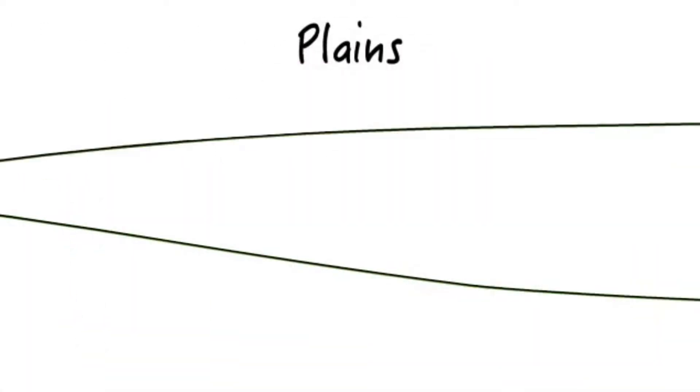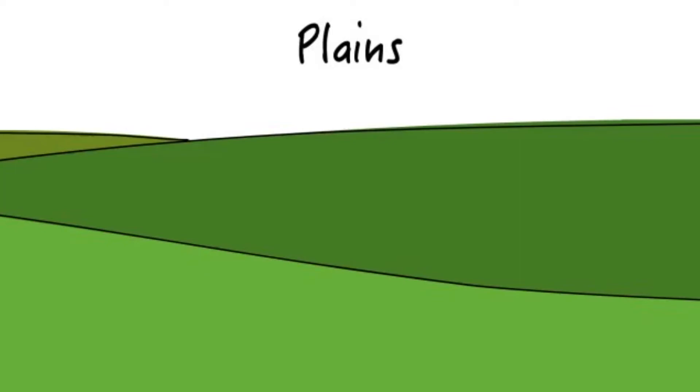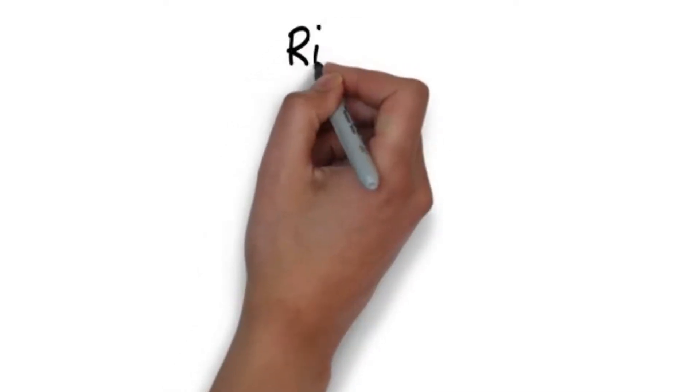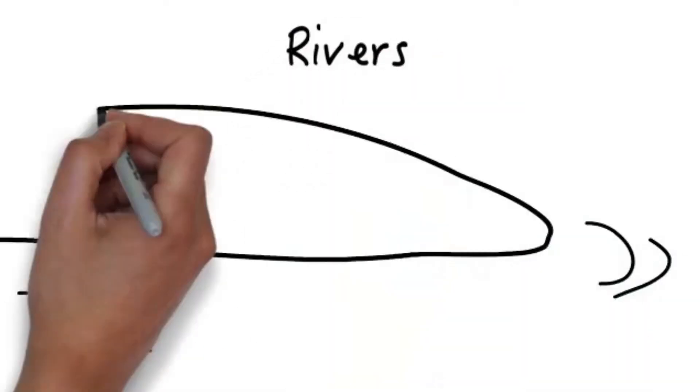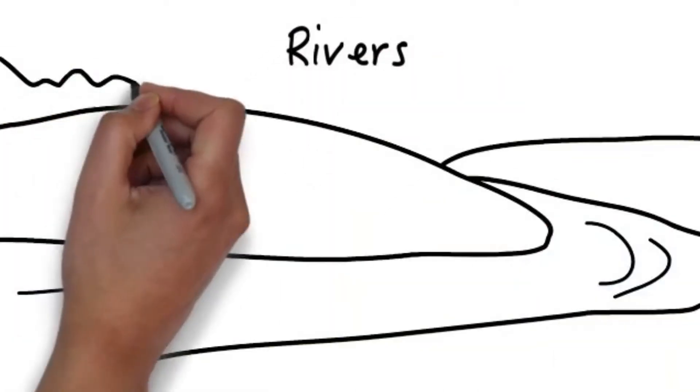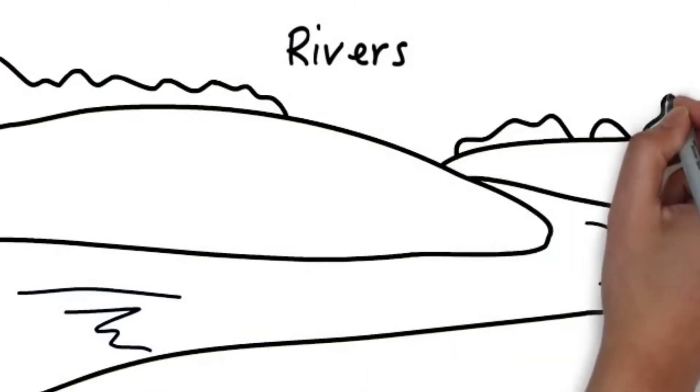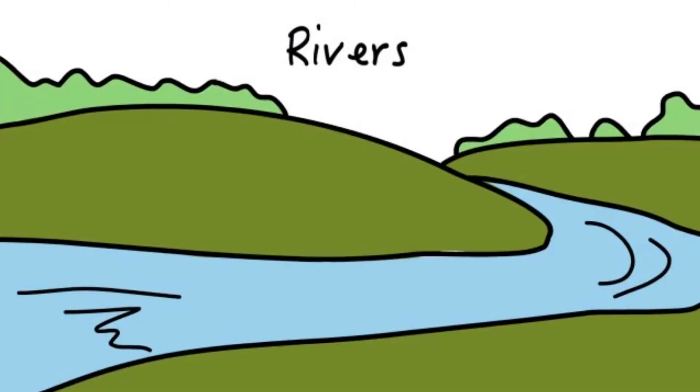Plains are low, flat, and wide landforms. Rivers are natural streams of water that pass through different areas giving shape to the land.